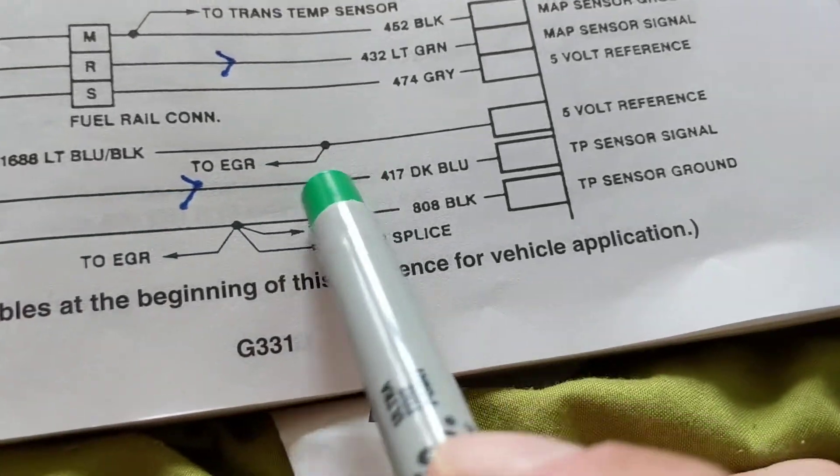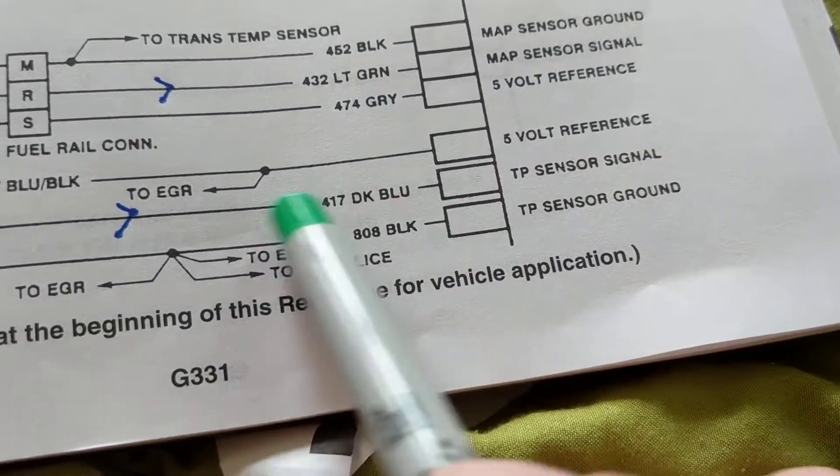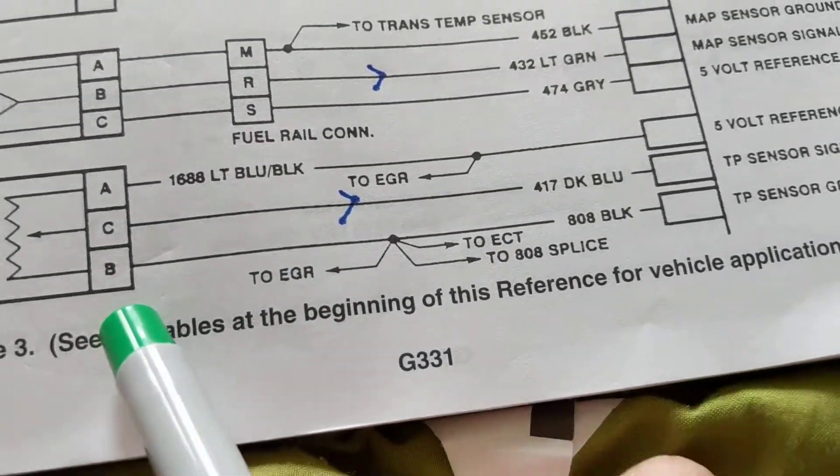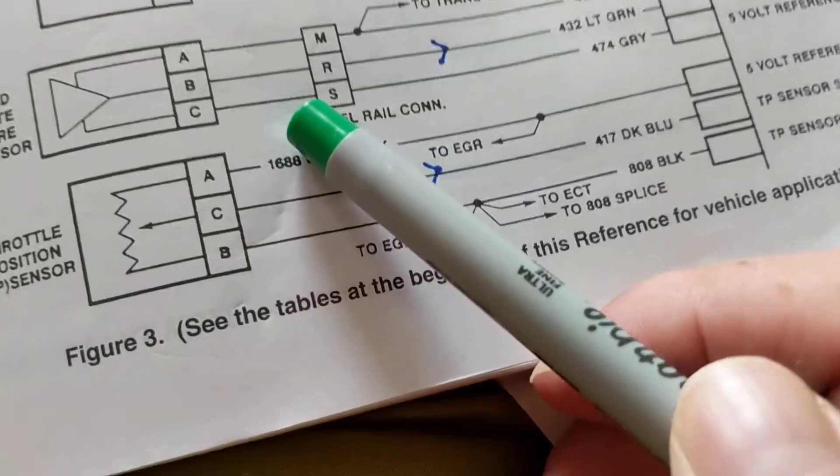When you open the throttle, you hit the gas pedal to let more air in. How many wires? One, two, three. This is called a pot.